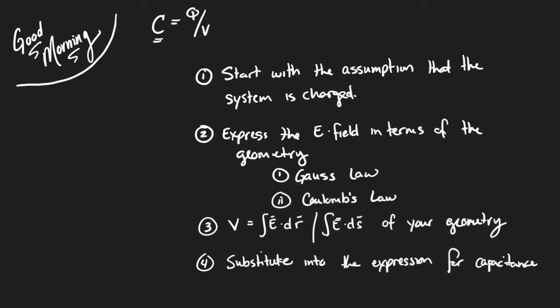Generally there are only three types of capacitors discussed in AP literature — not because they're special to AP, but because there are really only three shapes that can be used to make a capacitor. It's really hard to make them any other way. Although any two pieces of metal can technically be a capacitor, your goal is to increase the strength of the electric field between the two pieces and try to isolate the charges.